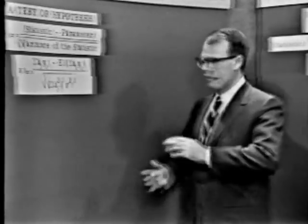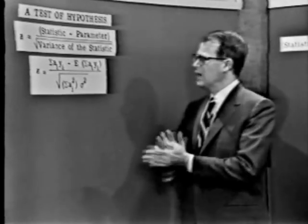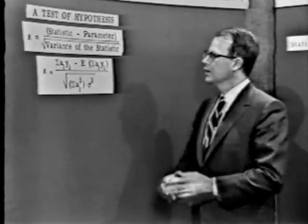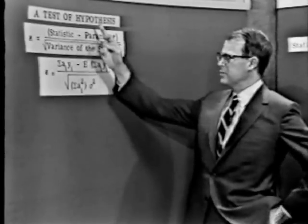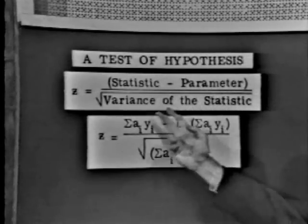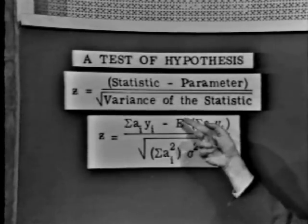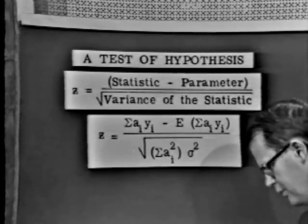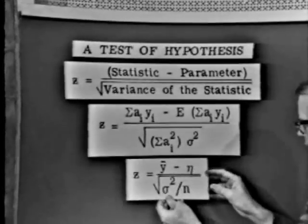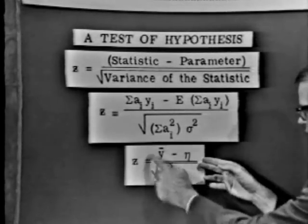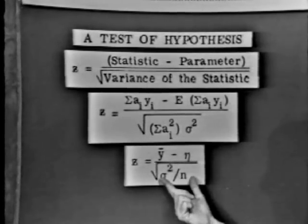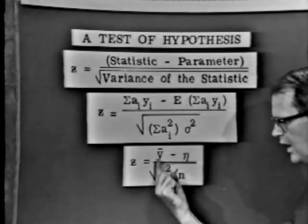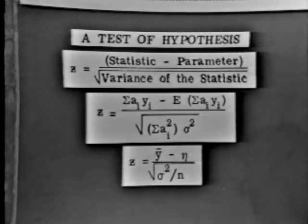Suppose that you were interested in estimating a parameter of some sort, and that parameter could be estimated by a linear statistic — say, a mean. You all know that if I wanted to test a particular hypothesis about the parameter, I would take the statistic minus the parameter and divide by the square root of the variance of the statistic. If my parameter were a simple mean, I would have y-bar minus the mean divided by the square root of sigma squared over n.